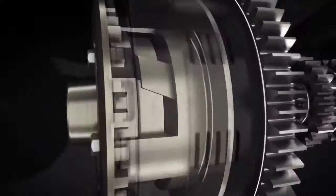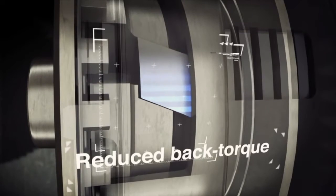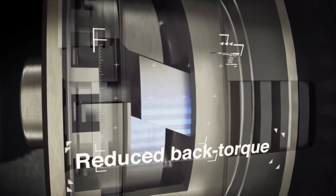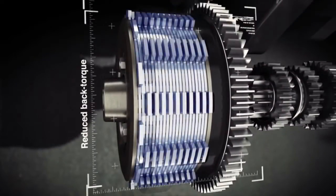During deceleration, the ramps force the clutch boss and pressure plate away from each other, decreasing clutch engagement for a smoother downshifting feel. Another advantage that means reduced riding effort and a more comfortable ride.